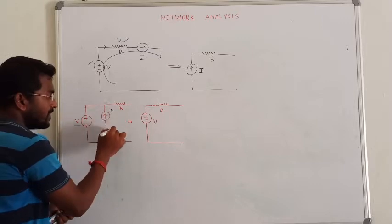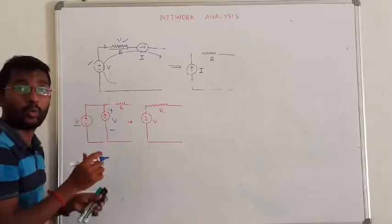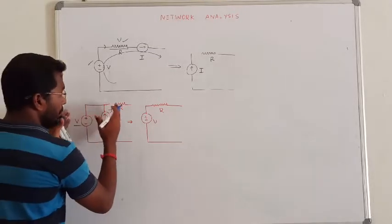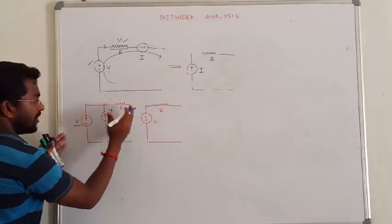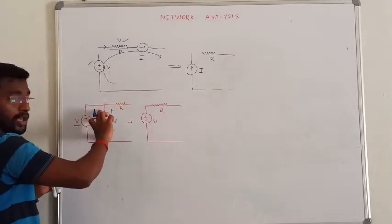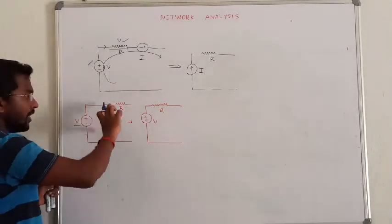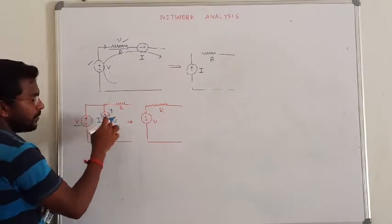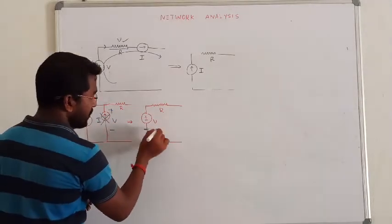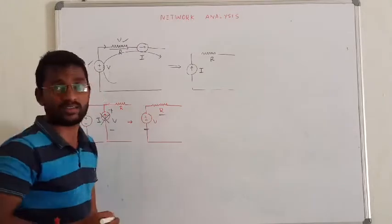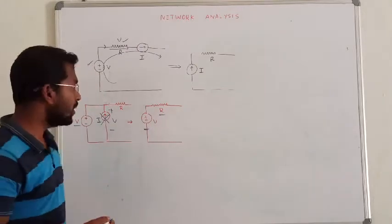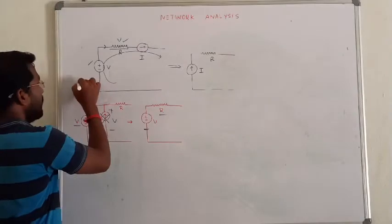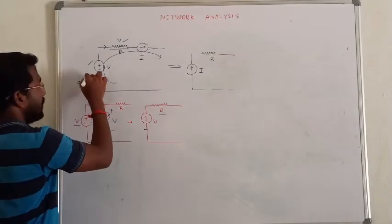So, if you find a parallel circuit, the voltage is the same. If there are parallel sources, you can transfer the voltage source string. You can transfer the current source with the equivalent resistance. That is how we are transforming — it is the basic fundamental properties of series and parallel circuits.